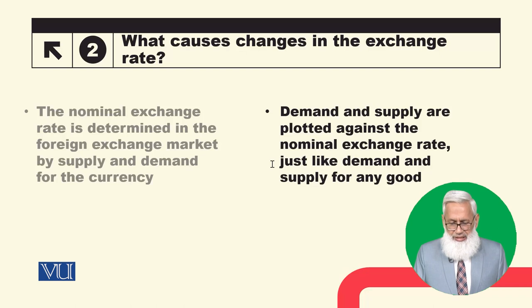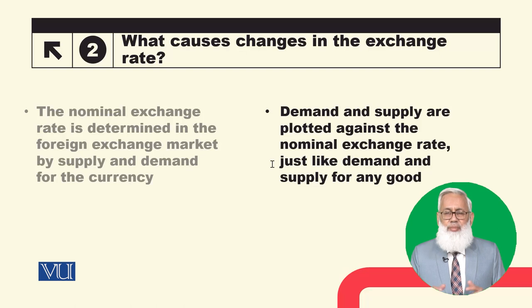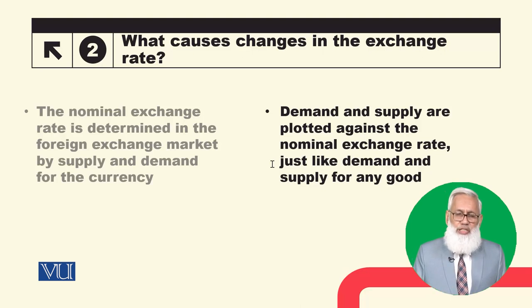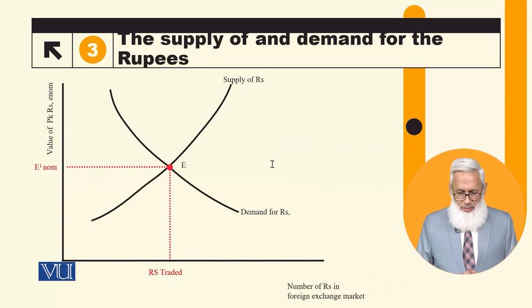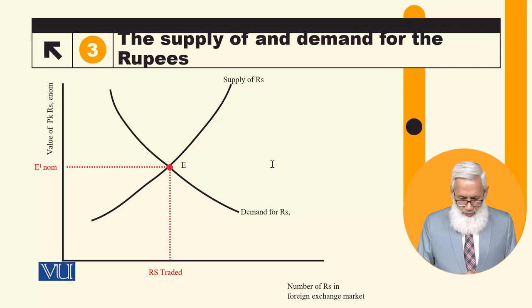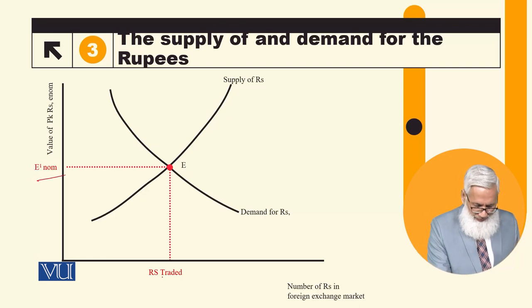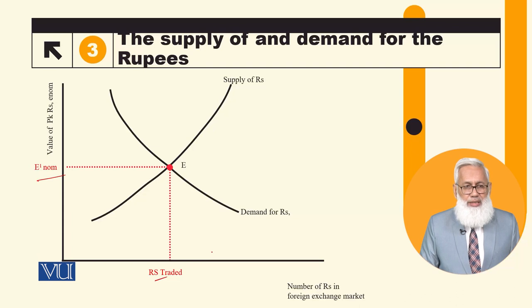Demand and supply are plotted against the nominal exchange rate, just like demand and supply for any good. In a simple microeconomics demand or supply curve, we use the vertical axis for the commodity price. Here we will use the nominal exchange rate, because this is the price of our currency. The demand curve is negatively sloped, the supply curve is positively sloped, and their intersection determines the equilibrium exchange rate.